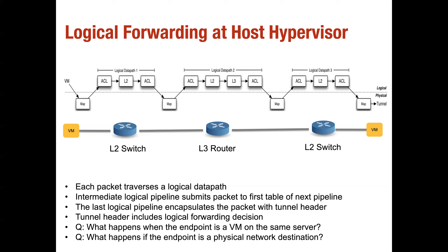No — if two VMs of the same tenant are on the same physical server, there is no need to tunnel. The packet from VM1 goes through OVS, whatever logical processing has to be applied is applied, and if it turns out the destination is a VM on the same server then there is no need for encapsulation — it is locally routed to that other VM.